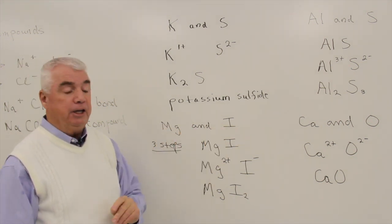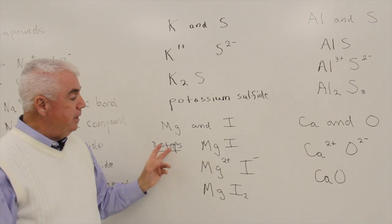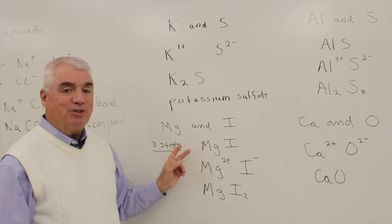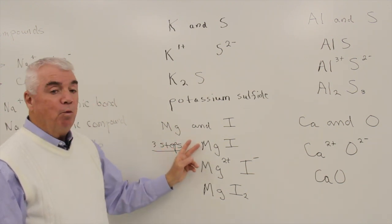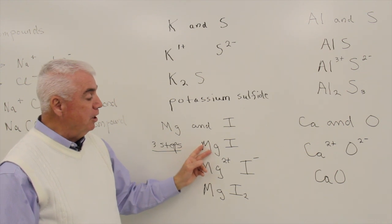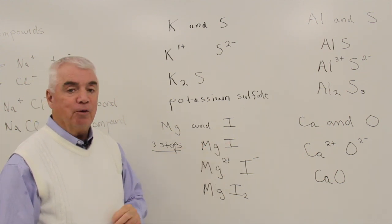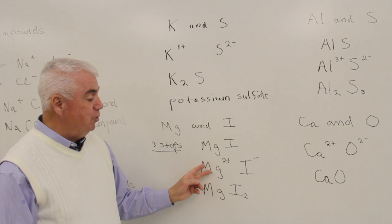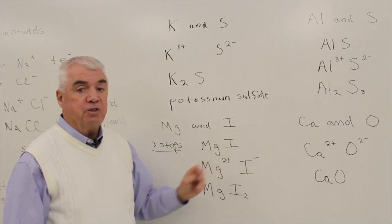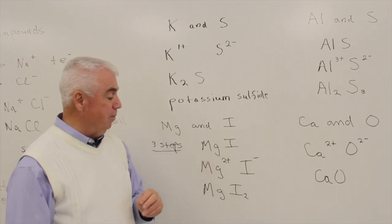Let's look at magnesium and iodine. And I'd like to do these in three steps. Step one, we'll put the metal on the left, the nonmetal on the right. Step two, let's indicate the ions that these two elements tend to form.